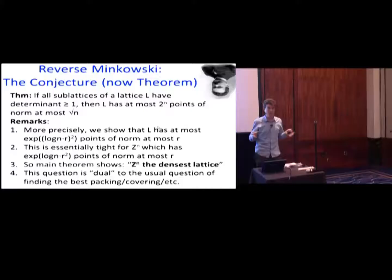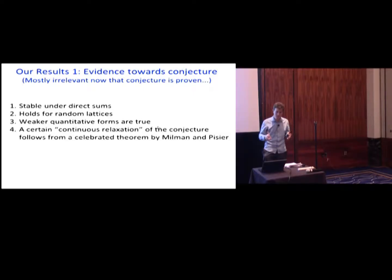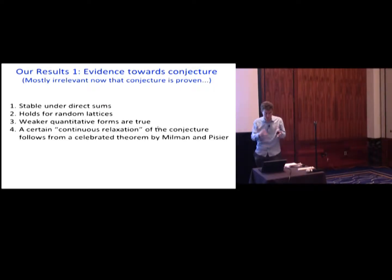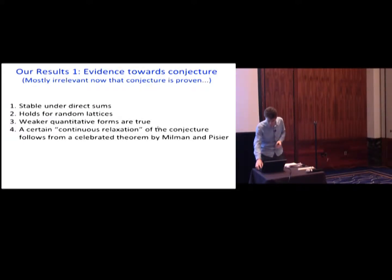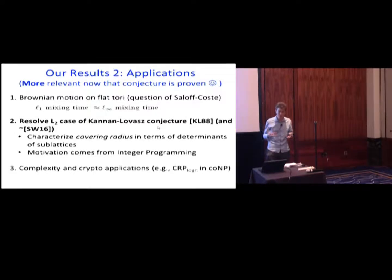So what do we do in the paper? The paper ended up being more than 60 pages long. We prove some evidence toward the conjecture — now mostly irrelevant because it's proven. We show that a relaxation of the conjecture follows from a very nice theorem by Milman and Pisier, which gave us confidence we weren't being totally stupid. More interesting and relevant now are the applications, which is what we spend most of the paper on — showing all sorts of applications of that conjecture and our theorem.